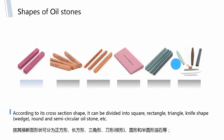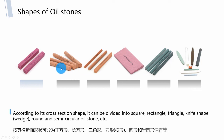According to the cross-section shape, oilstone can be divided into square, rectangle, triangle, leaf shape, round, and semicircular oilstone, etc. You can see there are many shapes of oilstones. This oilstone can be customized according to customer requirement.